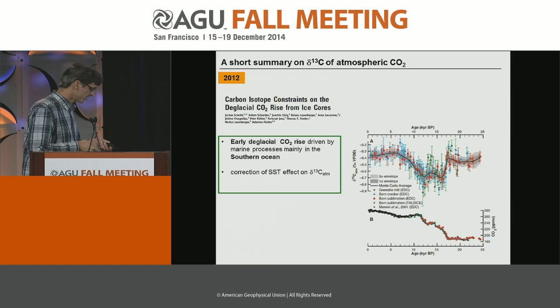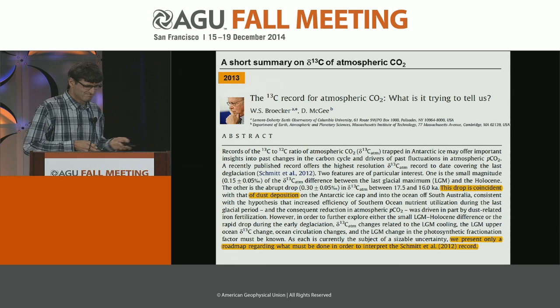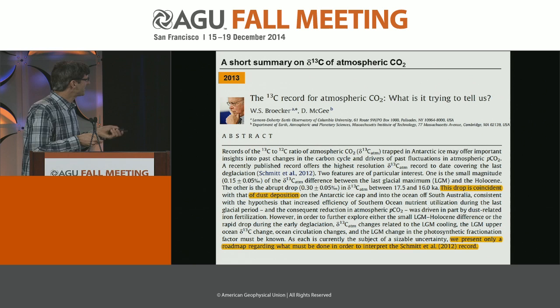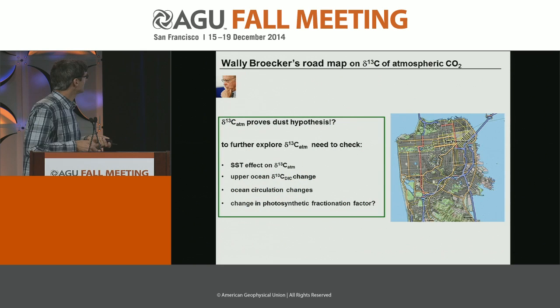Again it was Wally Broecker who said the carbon cycle is way too complex to come up with such a simple statement. He said you have to think more. Wally said we present only a roadmap for what must be done to interpret this record — he admits it's complicated. But he says it's likely the dust: look at the dust. So this is a roadmap — you have to think about lots of things, and you can't easily constrain this in the deep past.